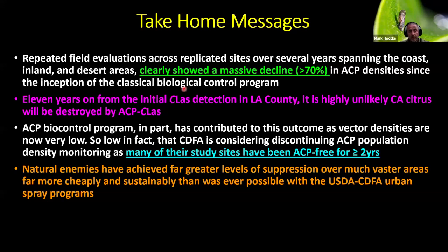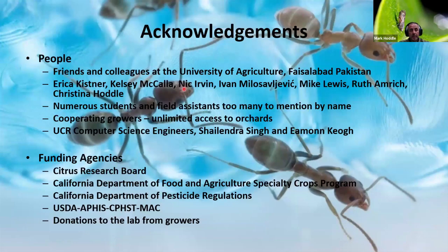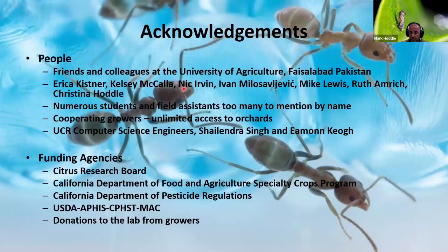We've been trying to amplify those impacts even further, especially for citrus growers, by coming up with Argentine ant management programs — whether biodegradable hydrogel beads that deliver insecticides to kill the ants, cultural controls, or automated monitoring systems so you know where in your orchards ants are problematic and where to target your control efforts. About 6,000 trees more or less have succumbed to Huanglongbing in California, most or all of them in urban areas — a minuscule fraction of the millions and millions of trees growing in gardens in these urbanized areas. This has been a massive team effort over 14 years, and our contributions to this project in terms of biological control and ant suppression in citrus orchards have now pretty much wrapped up.